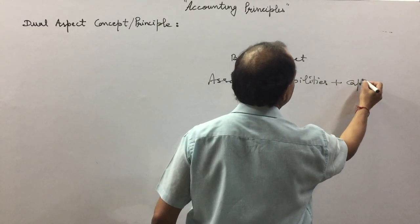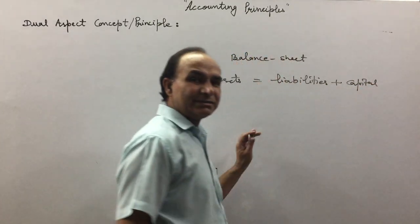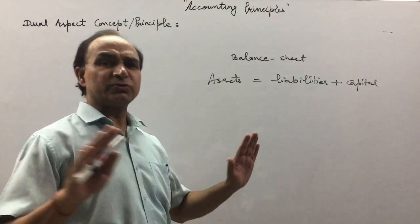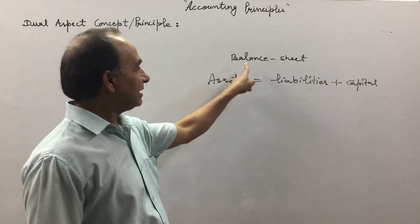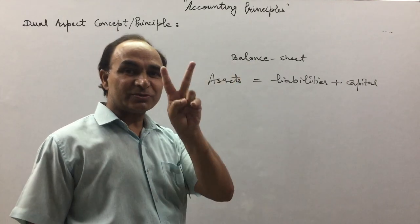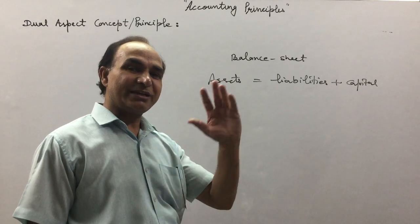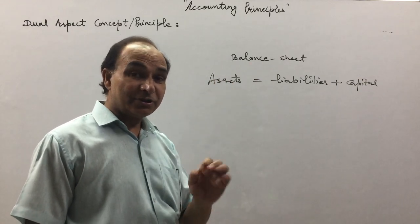...capital. This is our accounting equation, which holds good in all situations. Both sides of the balance sheet will be equal: Assets equals Liabilities plus Capital. If you talk about...